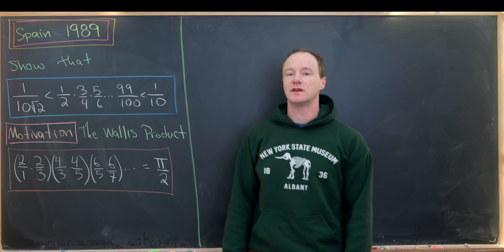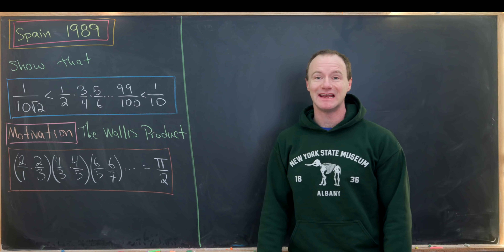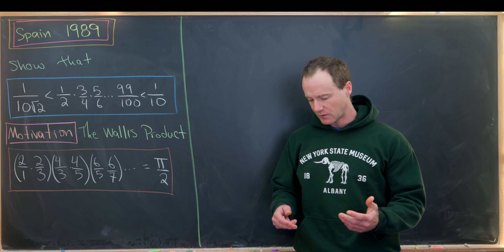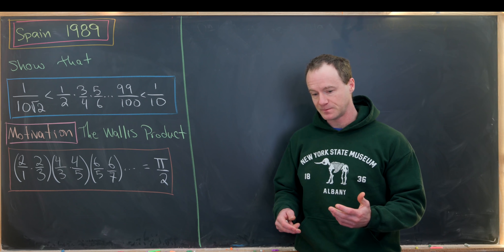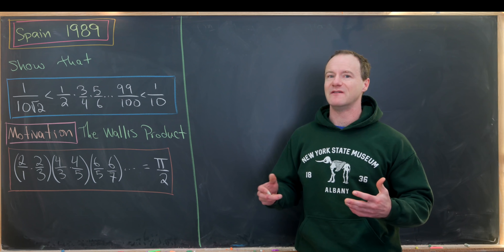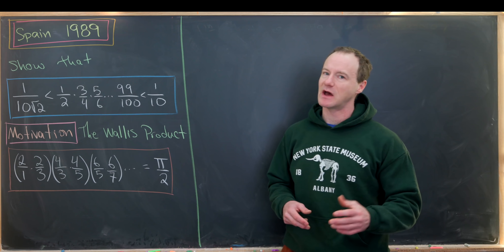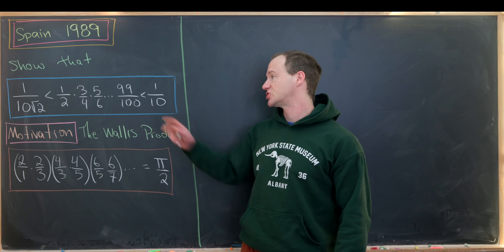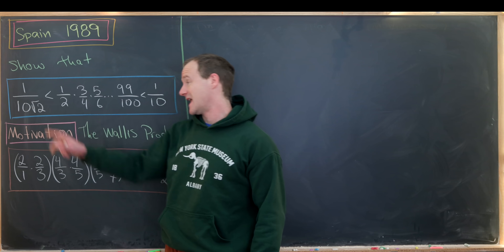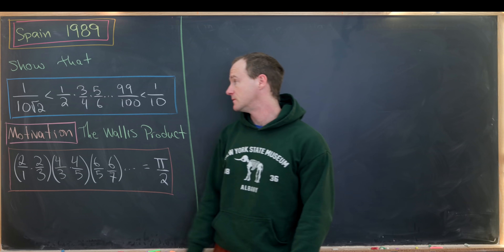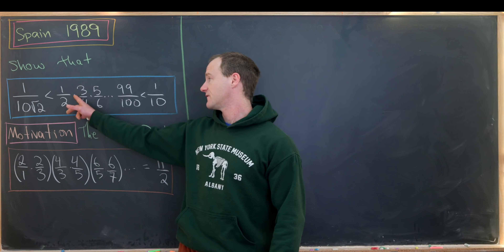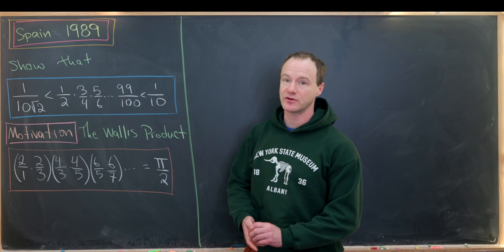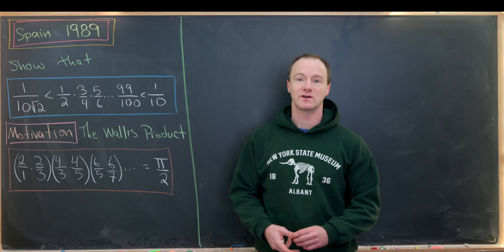Here we'll establish a nice inequality that was part of the 1989 Spanish National Math Olympiad. I think it was motivated by a very famous identity in mathematics, which we'll talk about after we state the problem. Our goal is to show that 1 over 10 times the square root of 2 is less than 1 half times 3 quarters times 5 sixths, all the way up to 99 over 100, which in turn is less than 1 over 10.